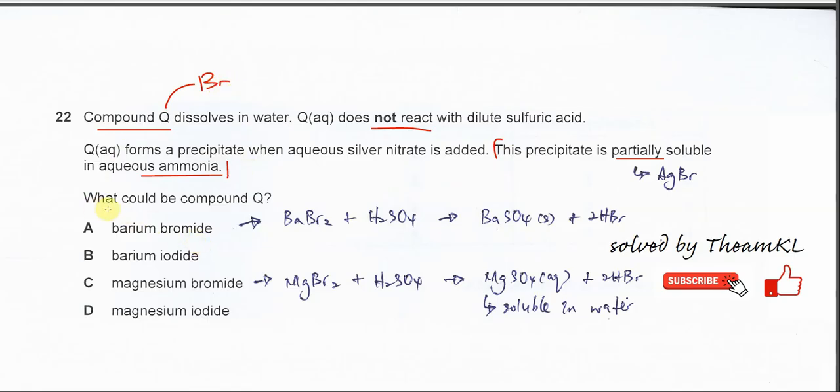So what could be compound Q? The compound Q now it just can be barium bromide or magnesium bromide. So we choose from these two. And we need to use the first statement. Q does not react with the dilute sulfuric acid.